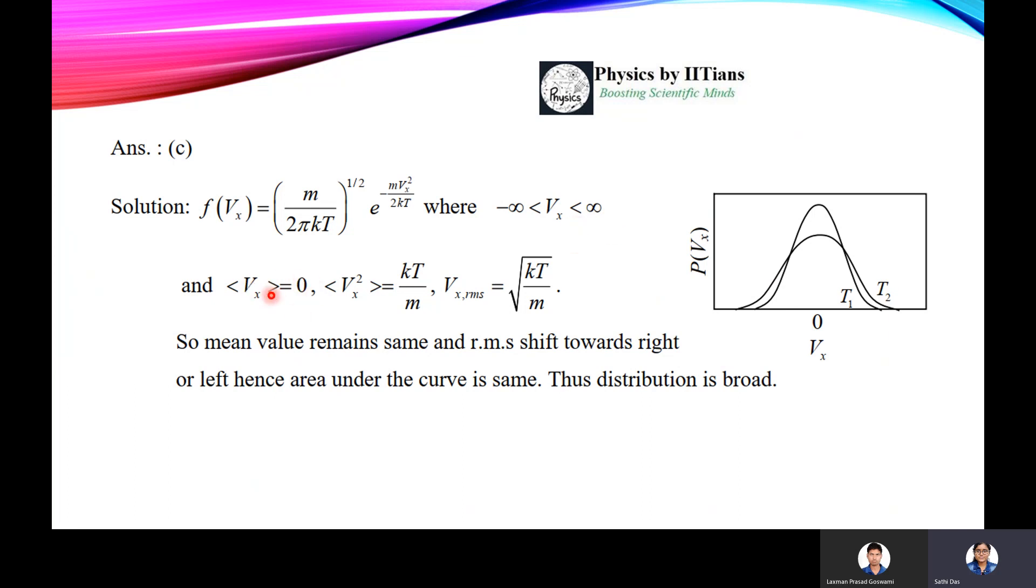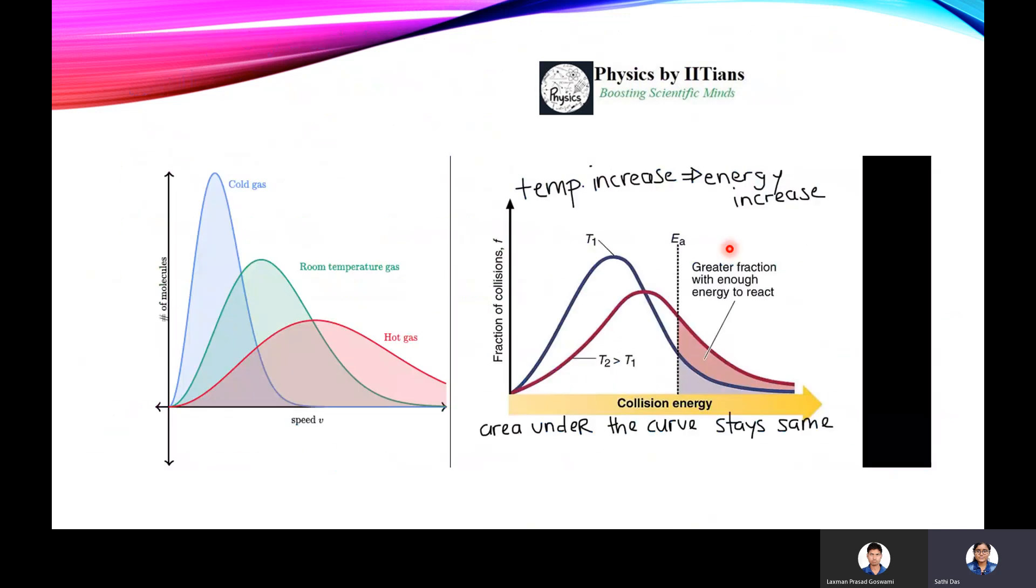So average of vx should be zero and vx square average is kT by m. So rms of vx, or vx rms, is root kT by m. So the mean value remains the same and the rms shifts towards the right, which I have already shown. Hence, area under the curve is the same and the distribution becomes broad. So the temperature is increasing means the distribution is becoming broad.